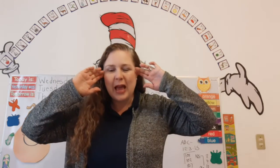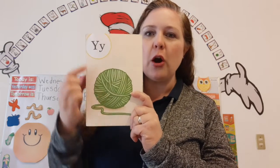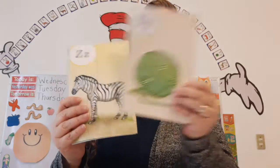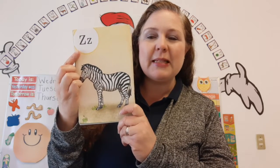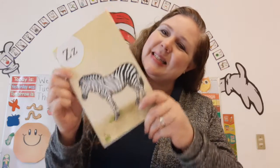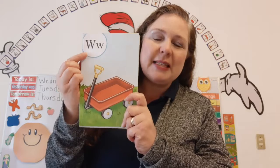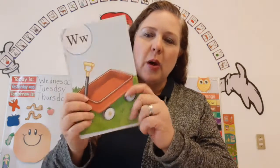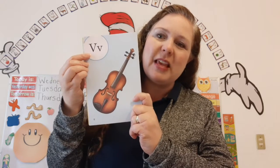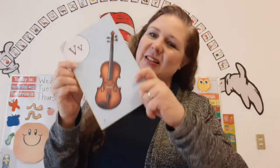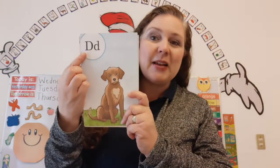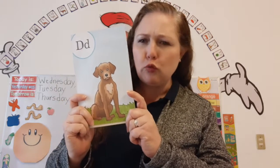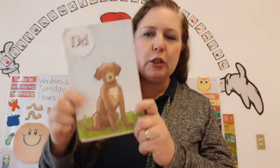Now stop, look, and listen. We're going to review our consonant sounds. The name of this letter is Y. It makes a sound Y as in yarn. Y says Y. The name of this letter is Z. It makes a sound Z as in zebra. Z says Z. The name of this letter is W. It makes the sound W as in wagon. W says W. The name of this letter is V. It makes a sound V as in violin. V says V. The name of this letter is D. It makes a sound D as in dog. D says D. Super duper.